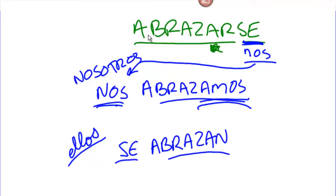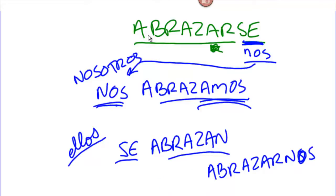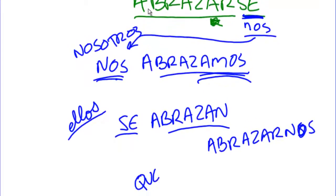Now some of you might be asking: can't I say something like abrazarnos, since you said the pronoun can go connected to the infinitive? Yes, but you still need a conjugated verb there. You can't just say nosotros abrazarnos — 'we to hug each other.' You still have to have a conjugated verb. So you can have something like vamos a abrazarnos — we are going to hug each other — or queríamos abrazarnos — we wanted to hug each other. You can't use the infinitive form unless you have a conjugated verb.